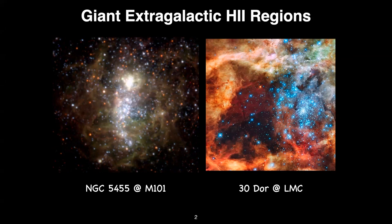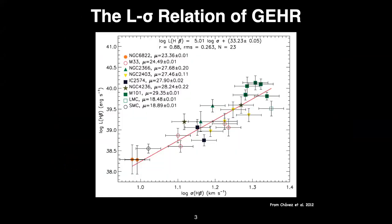Knowing that there are these scaling relations, research continued in the 1980s. The kind of scaling relation we find in extragalactic H2 regions shows the logarithm of velocity dispersion on the x-axis and luminosity on the y-axis, with a relatively tight correlation. We have a series of giant H2 regions in nearby galaxies, with the slope around five and a zero point of around 33.23. The RMS is about 0.263, so it's a relatively tight correlation between luminosity and velocity dispersion.